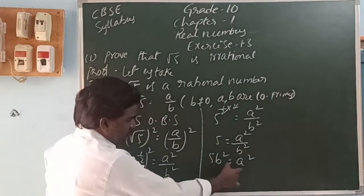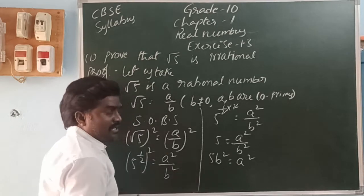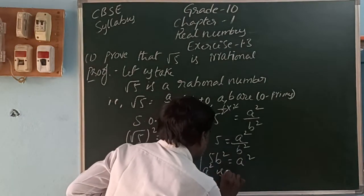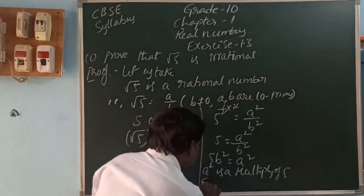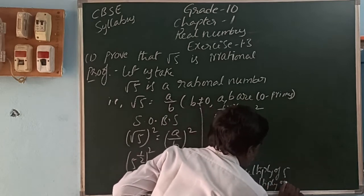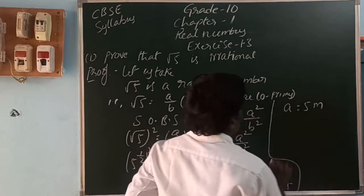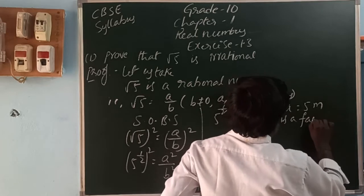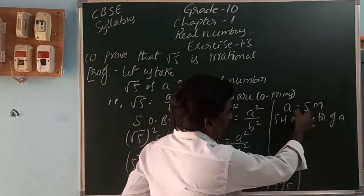Observe this equation: a squared equals 5 × b squared. That means a squared is a multiple of 5. When a squared is a multiple of 5, then a is also a multiple of 5. So 5 is a factor of a, meaning a is a multiple of 5, or 5 is a divisor of a.